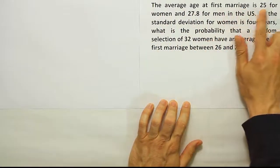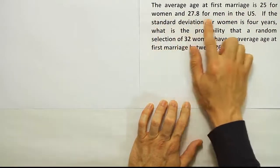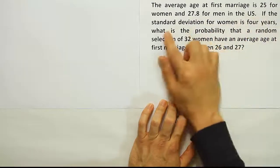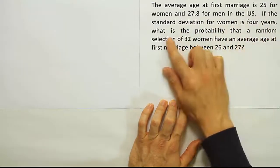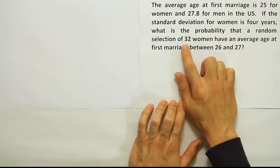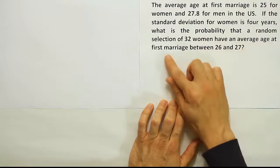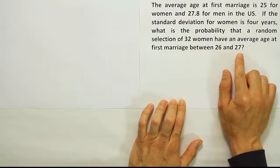The average age at first marriage is 25 for women and 27.8 for men in the US. If the standard deviation for women is four years, what is the probability that a random selection of 32 women have an average age at first marriage between 26 and 27?